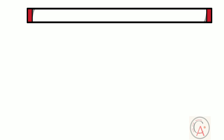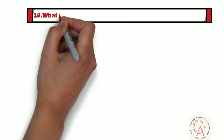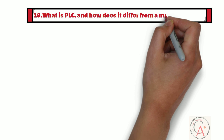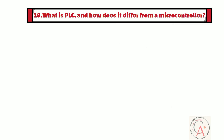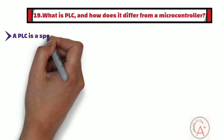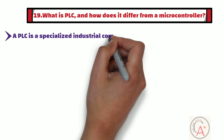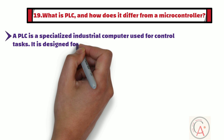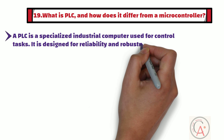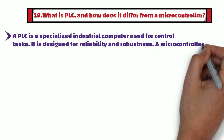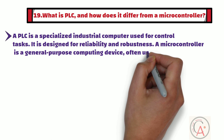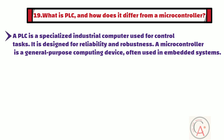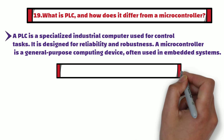The 19th question is: what is PLC and how does it differ from a microcontroller? A PLC, or Programmable Logic Controller, is a specialized industrial computer used for control tasks. It is designed for reliability and robustness, whereas a microcontroller is a general-purpose computing device often used in embedded systems.